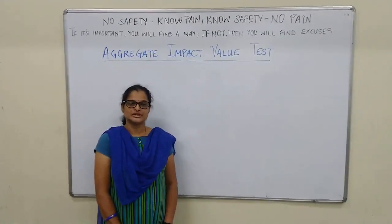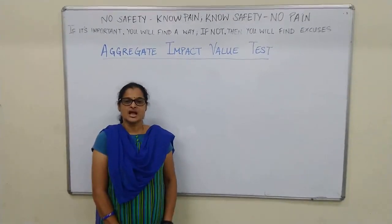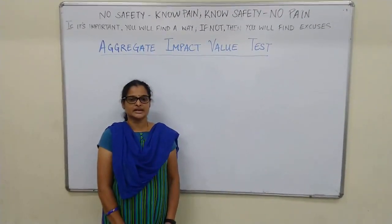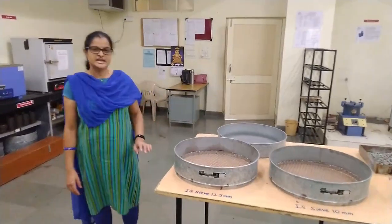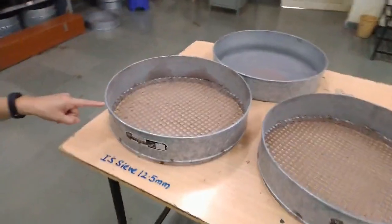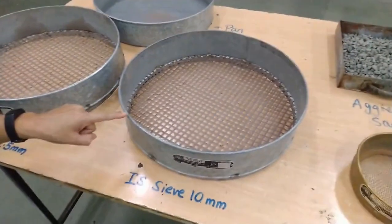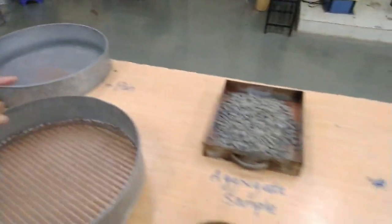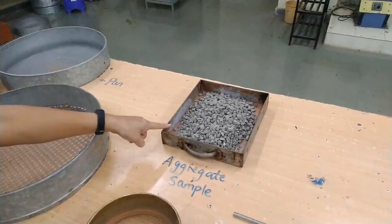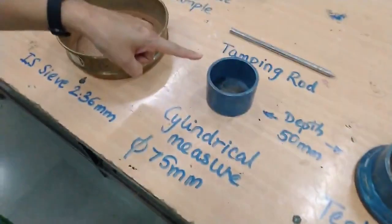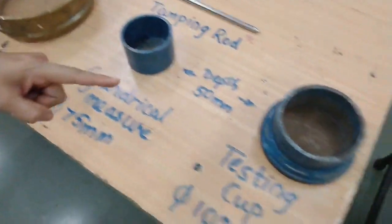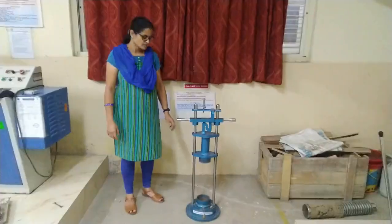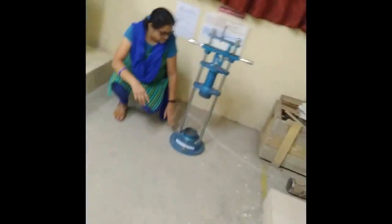Welcome to the transportation engineering lab. Today I am demonstrating our first practical — the aggregate impact value test. The objective is to determine the aggregate impact value for coarse aggregate. The apparatus required includes: IS sieve 12.5 mm, IS sieve 10 mm, IS sieve 2.36 mm, a pan, the aggregate sample, the cylindrical measure (75 mm diameter, 50 mm depth), the testing cup (102 mm diameter, 50 mm depth), the tamping rod, and the aggregate impact test apparatus.